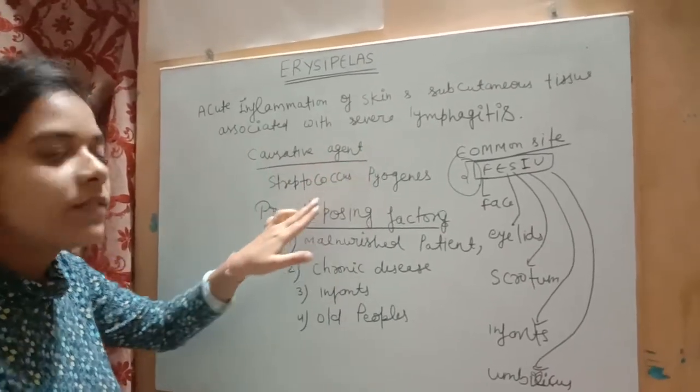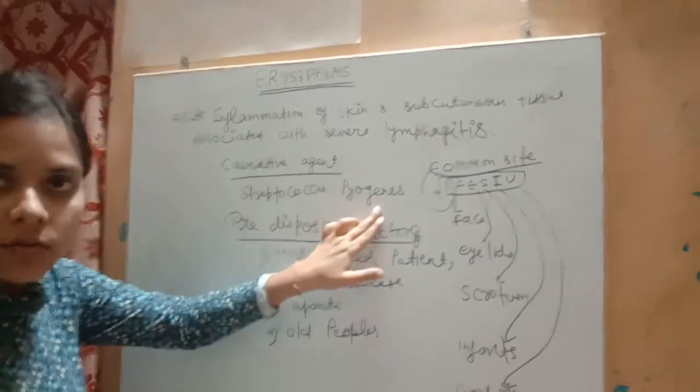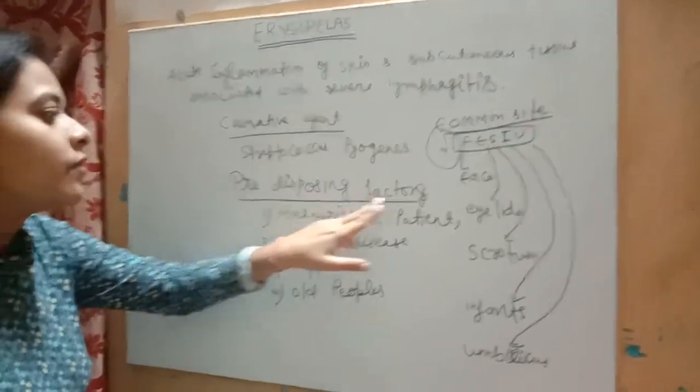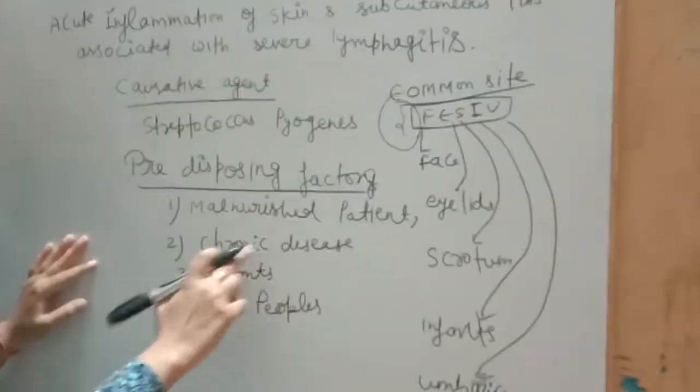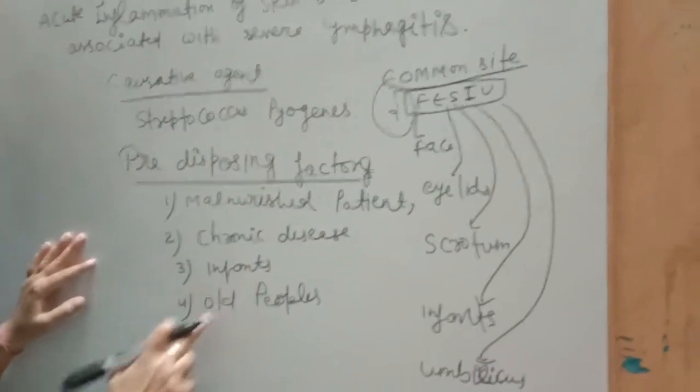Causative agents: the causative agent is streptococcus pyogenes. Predisposing factors are malnourished patients, chronic disease, infants, and old people.